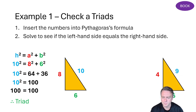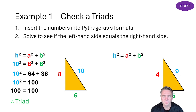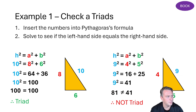Then we can try the triangle with sides 4, 5, and 9. Intuitively, 9 is probably a little too big. So we go through the process: 9 squared equals 4 squared plus 5 squared, giving 81 equals 16 plus 25, which is 81 does not equal 41. Therefore this is not a valid triad. That's the process of working out whether or not a set of numbers is a triad.